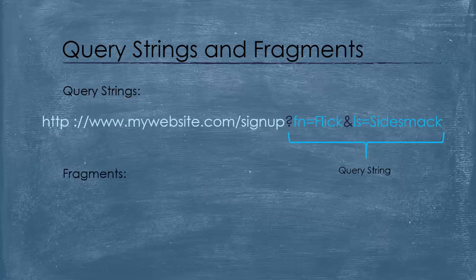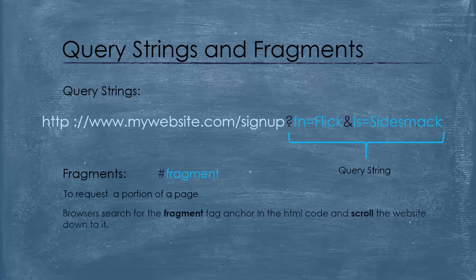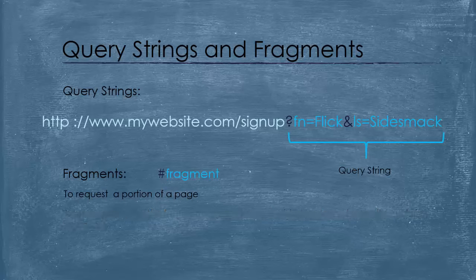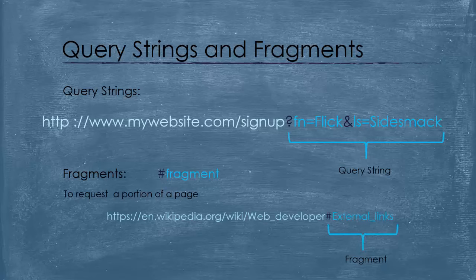Fragments are always at the end of the URL. You can identify a fragment by the hash symbol before it. They are used as a way of requesting a portion of a page. Browsers will see the fragment tag anchor in the HTML code and scroll the website down to it. For example, this is a URL that contains a fragment from the Wikipedia website.